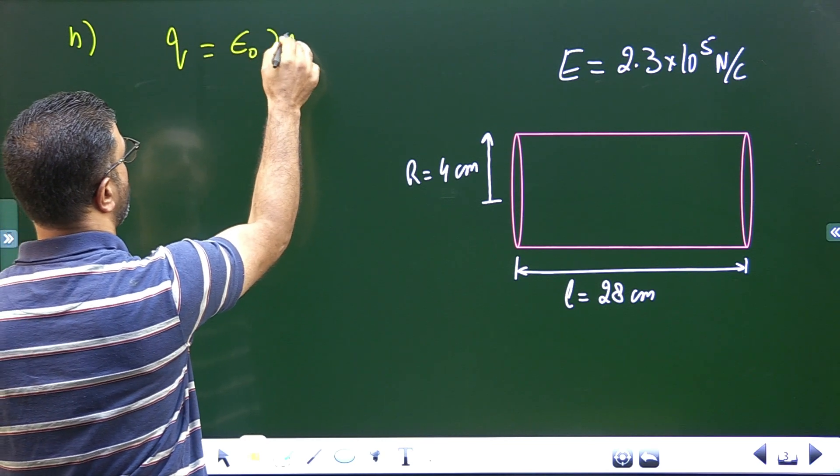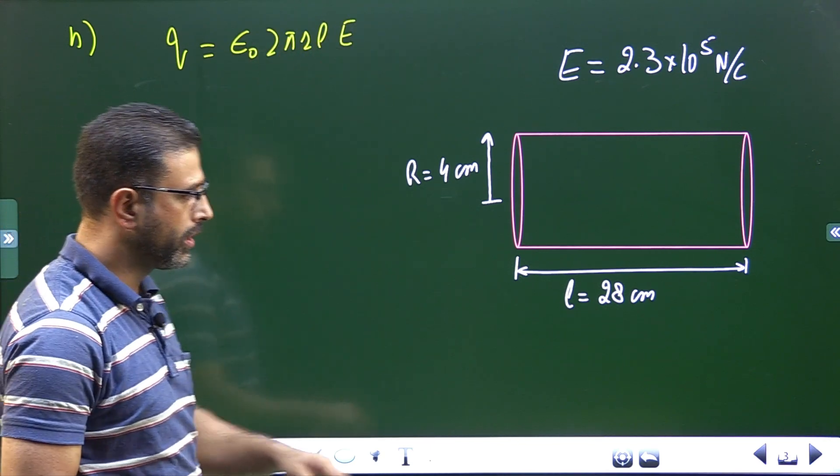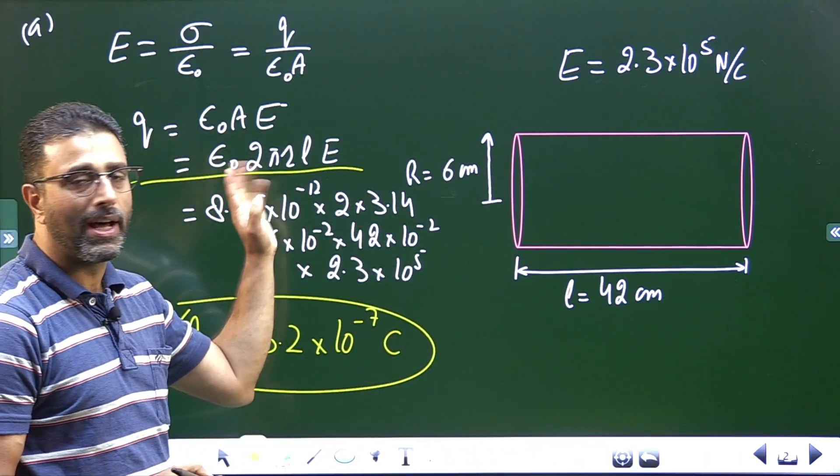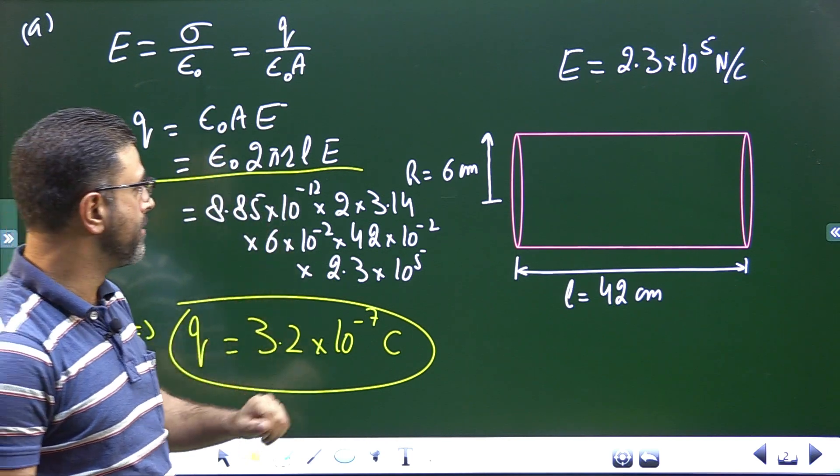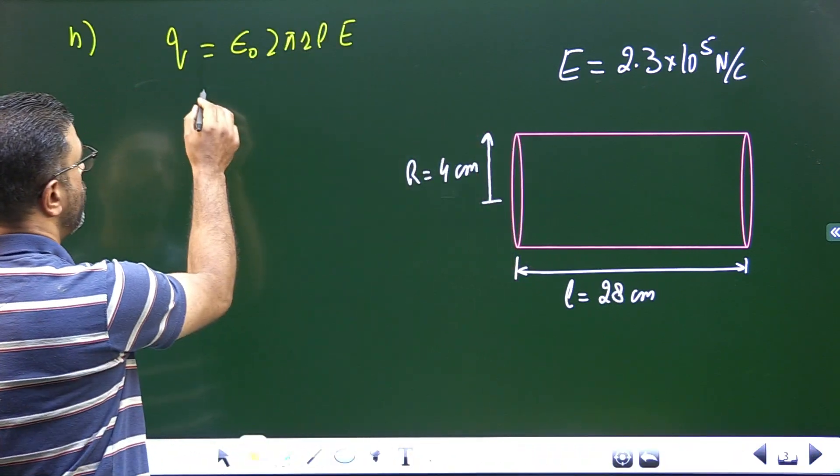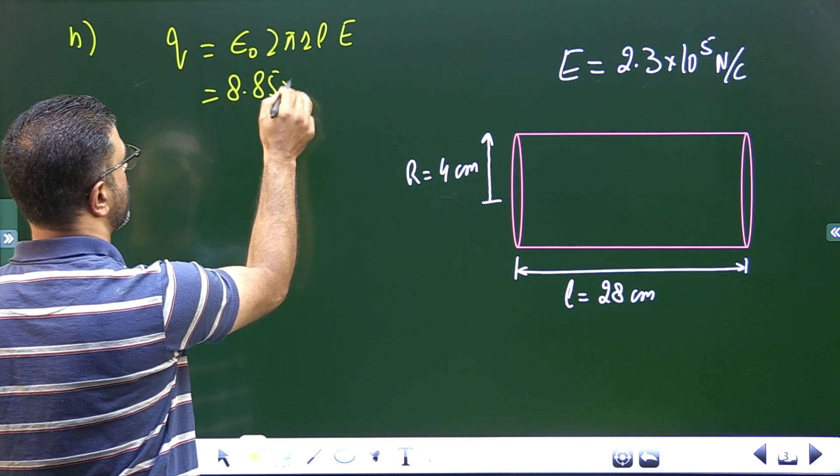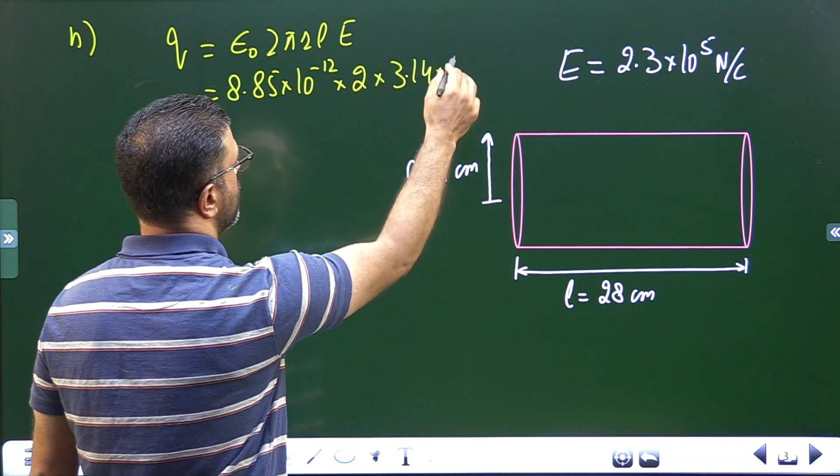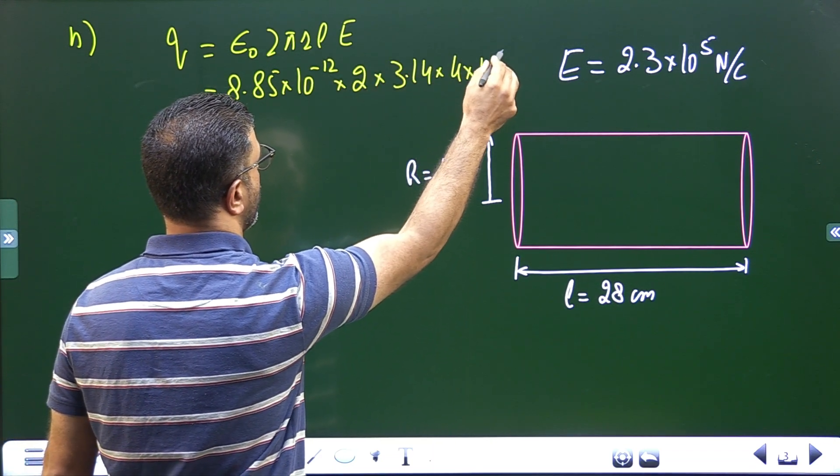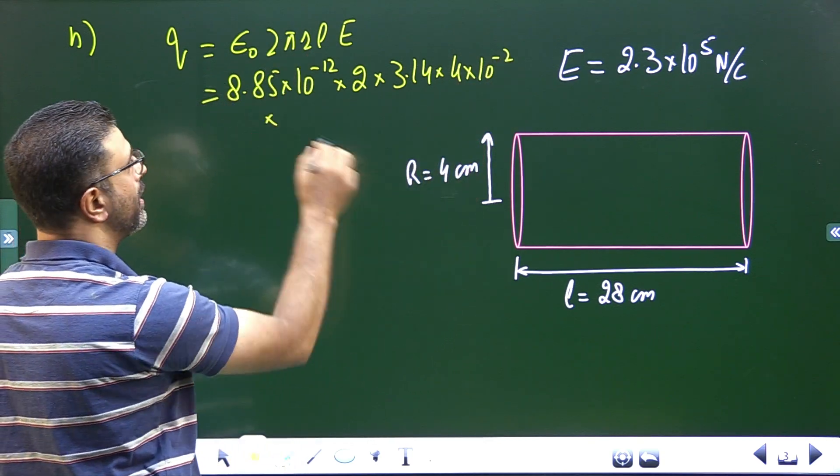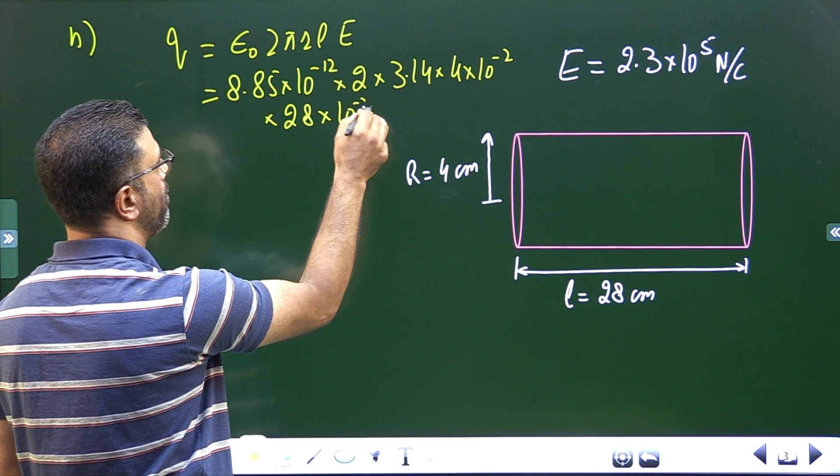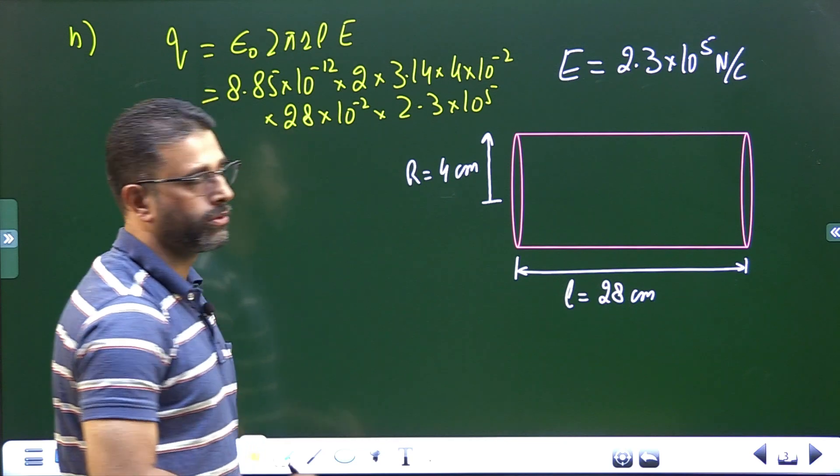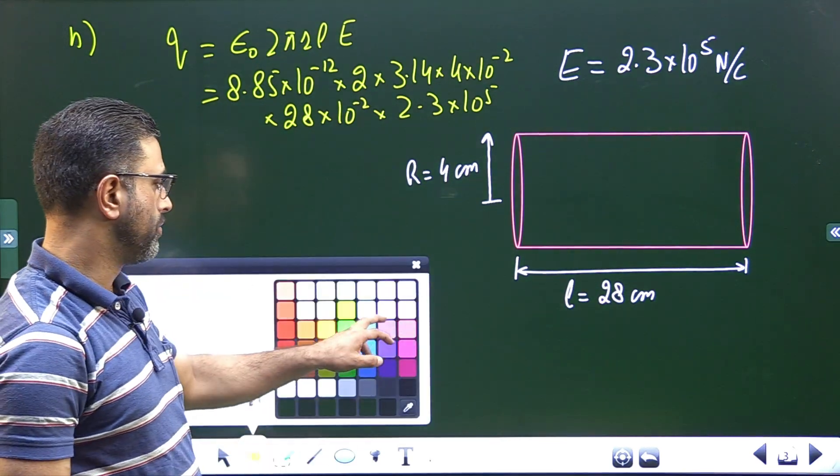From this equation I am starting, the only thing different is values of R and L, rest everything is same. Let's substitute the values again: 8.85 × 10^-12 × 2 × π is 3.14 × r is 4 centimeters so 4 × 10^-2 × L is 28 centimeters so 28 × 10^-2 × field is 2.3 × 10^5 Newton per Coulomb. Everything is in SI system.